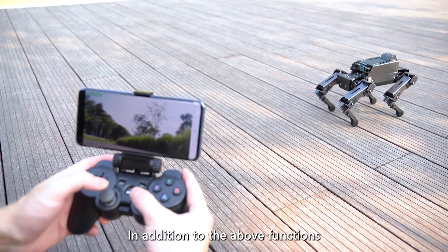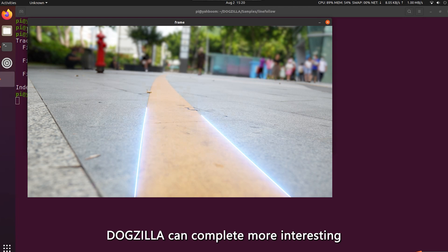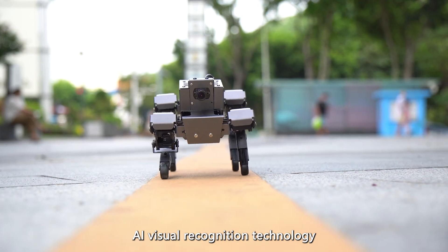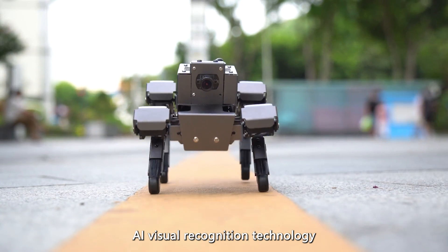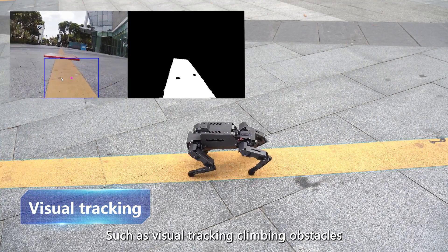In addition to the above functions, Dogzilla can complete more interesting projects with the help of AI visual recognition technology, such as visual tracking and climbing obstacles.